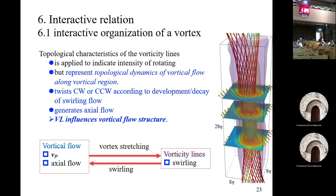This line has been applied to indicate the intensity of rotation of a vortex, but actually it represents topological dynamics of vertical flow along the vortical region, and it can twist clockwise or counterclockwise according to development or decay of swirling flow. Moreover, vorticity lines generate axial flow, so vorticity lines influence vortical flow structures. Therefore, vortical flow and vorticity lines have a kind of interactive organization system.